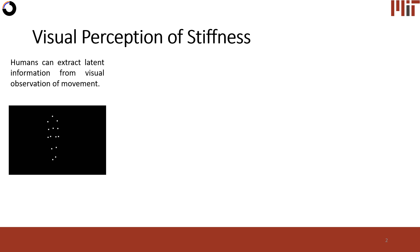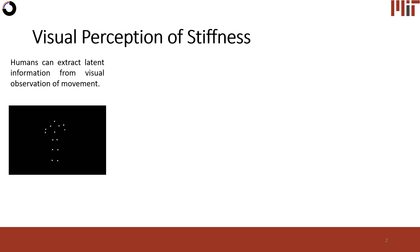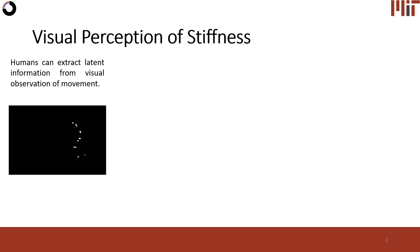There's this interesting phenomenon that shows that humans can extract latent information from visual observation of motion. This is best shown in point light animations where previously you saw a person walking, now you can see them jumping, and here you can see them climbing a set of stairs.